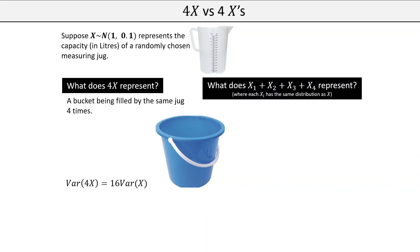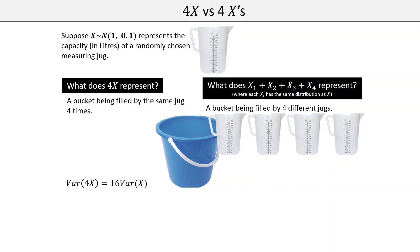That's different from four X's — four separate jugs filling the bucket. If one jug has an error making it more than a litre, another jug is just as likely to have an error making it less. These errors balance and cancel each other out; they're not compounding the same way. So Var(X1+X2+X3+X4) = 4·Var(X). The scaling factor is four rather than 16.